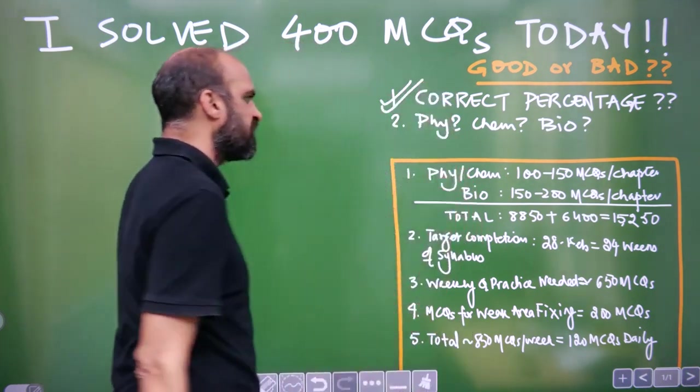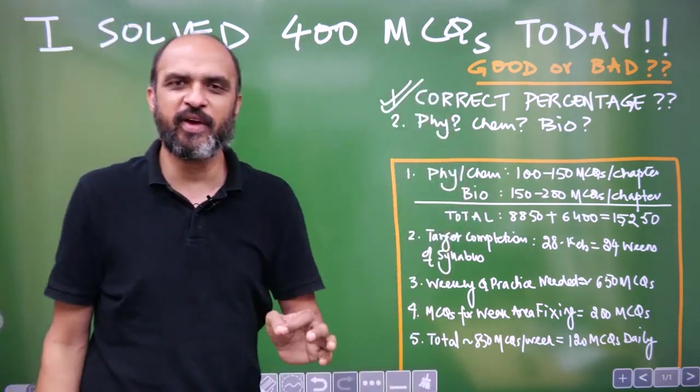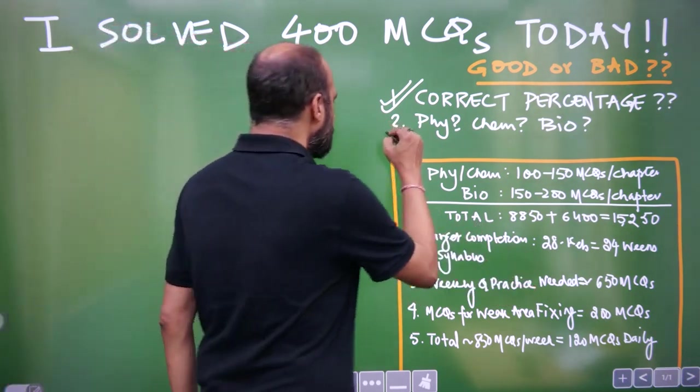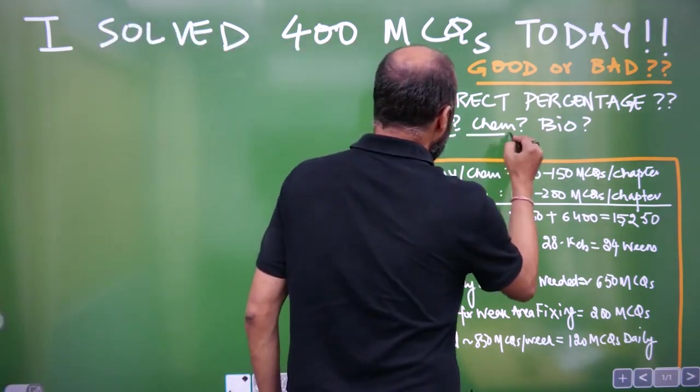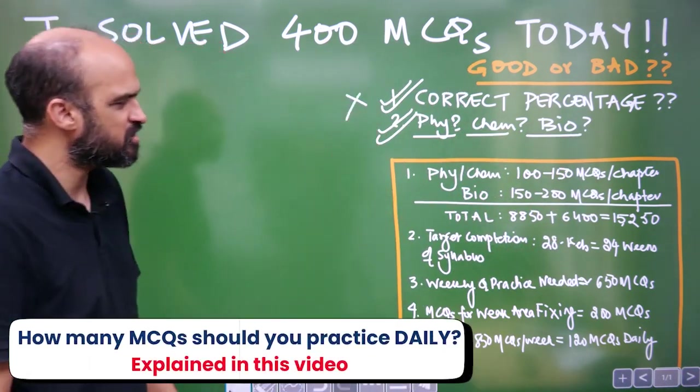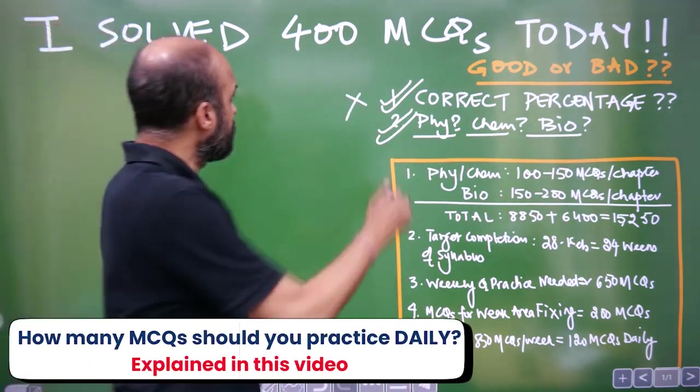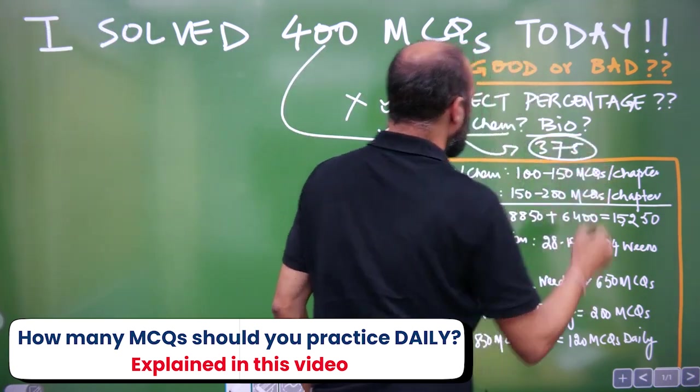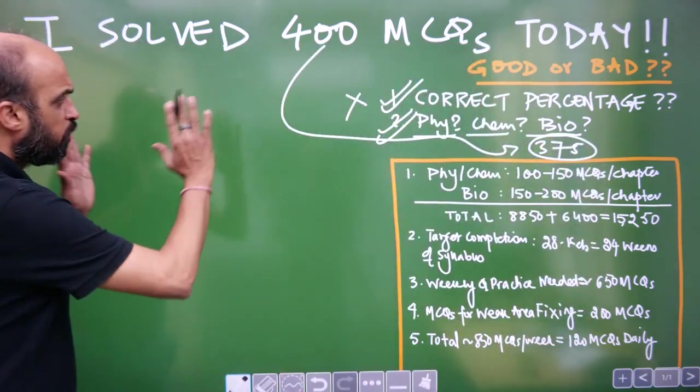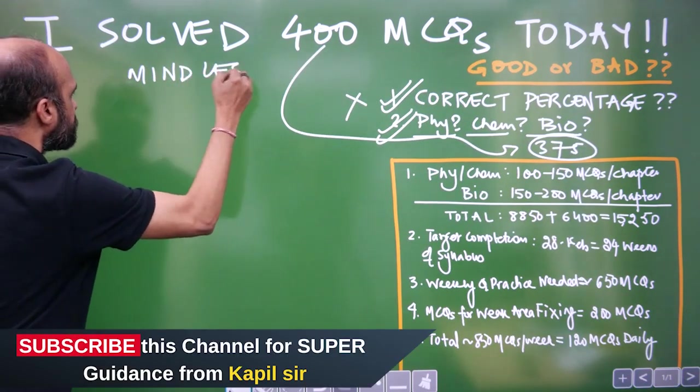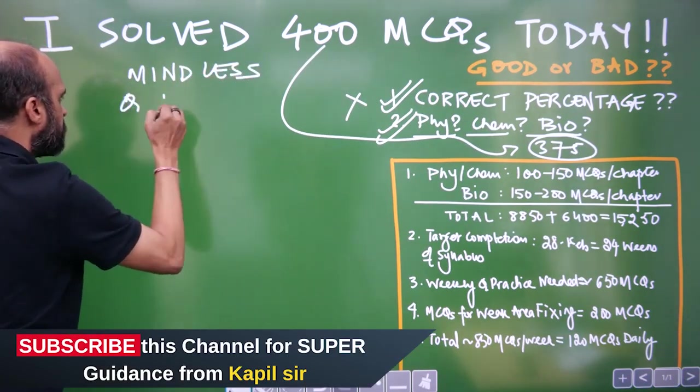what is your correct percentage? And this is where everything falls apart. The second thing that I ask is, what is the breakup in physics, chemistry, bio? So typically, students don't know about this correct percentage, which is an absolute tragedy. Typically, 400 questions translate into, sir, I practice 375 questions in bio. Both of these things are examples of what I call mindless question practice.